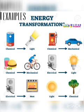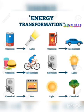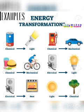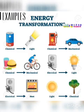Chemical energy in fuel converts to mechanical energy through the engine; electrical energy converts to light energy through the use of a plug in the circuit; light energy from the sun converts to chemical energy and is consumed by plants.